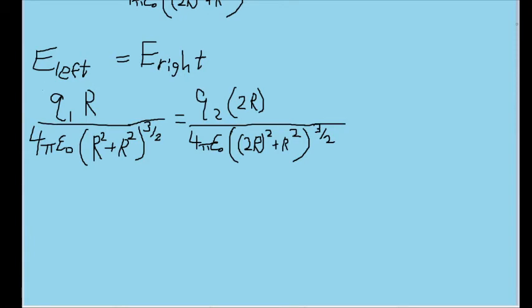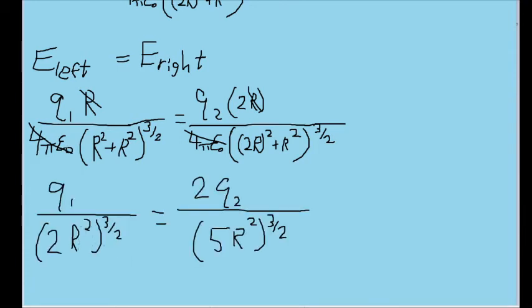And now we can start cancelling out some variables, like these r's at the top will cancel out here in the numerator. And so will the terms for k as well. Additionally, I'm going to sum up the r squared in the denominator. r squared plus r squared is equal to 2r squared, of course. And in this case, the square of 2r is going to be 4r squared. So 4r squared plus r squared is then 5r squared.